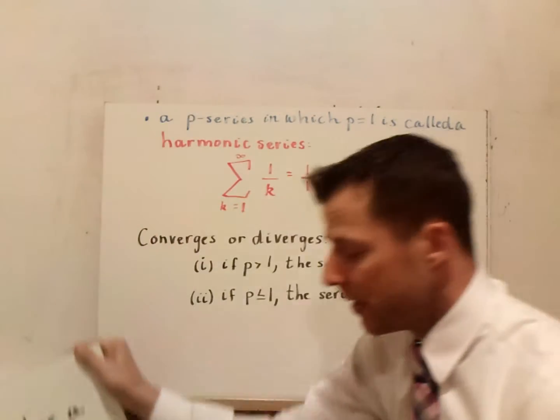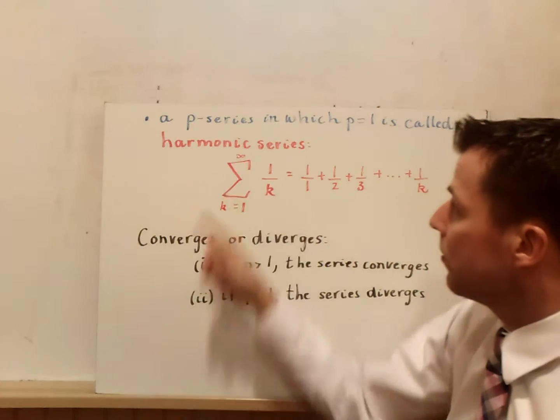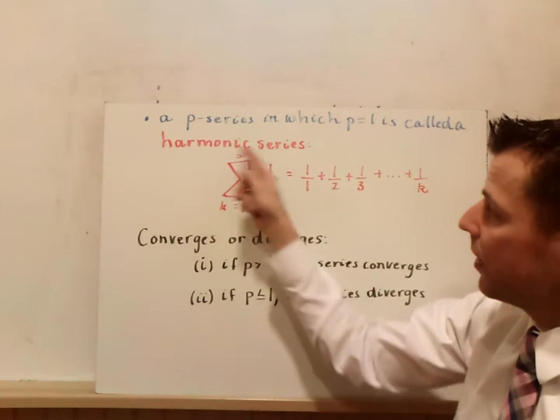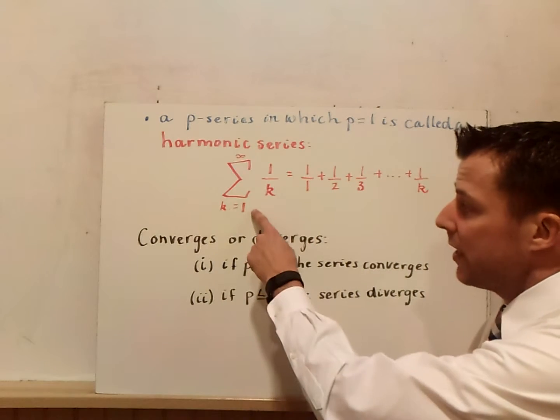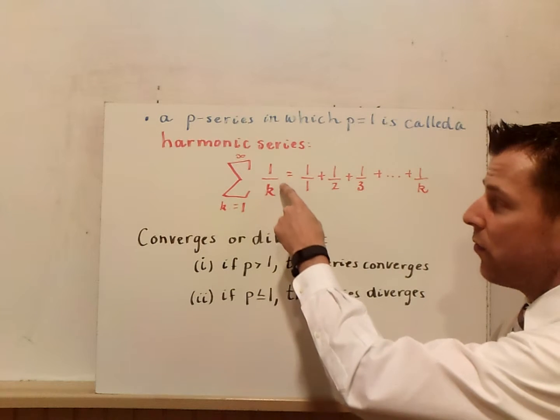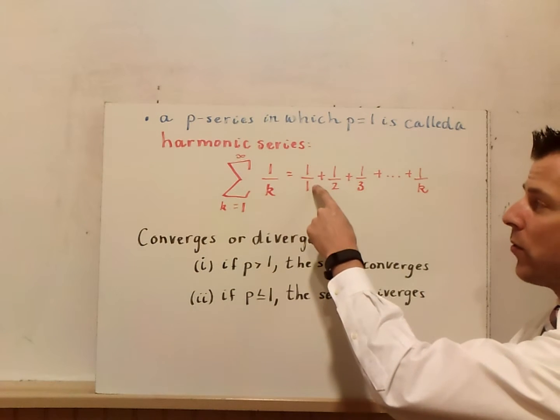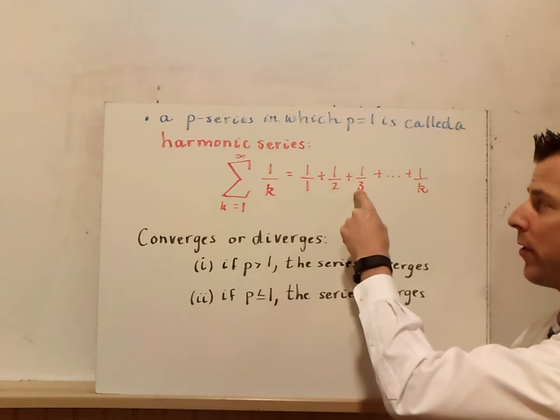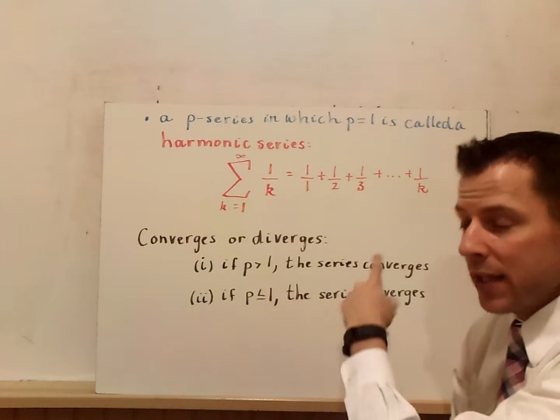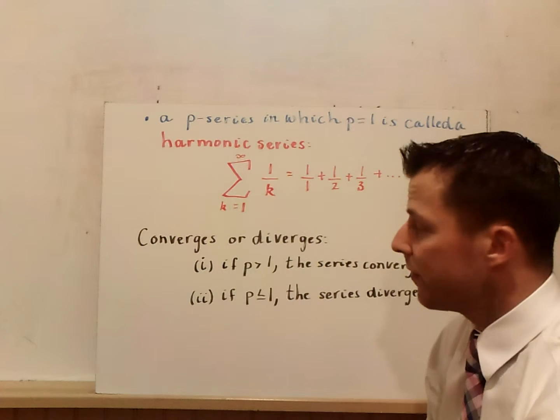A special type of p-series arises when p equals 1. That's called the harmonic series and it looks like this: from k equals 1 to infinity of 1 over k, you have 1 over 1 plus 1 over 2 plus 1 over 3 and so on. That series is going to diverge.